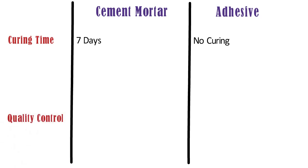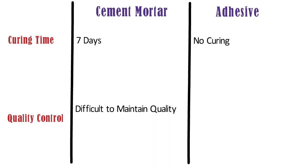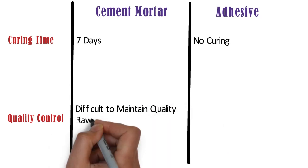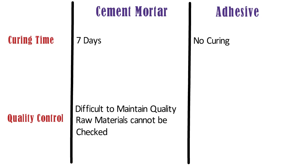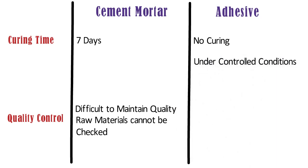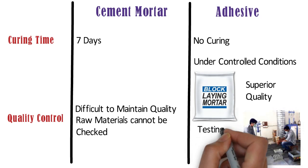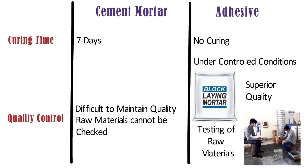Quality control. Cement mortar is prepared on site, and sometimes it is difficult to maintain the quality of mortar as it is being prepared on site. Also, the raw materials cannot be checked for quality at site. Whereas, adhesives are manufactured in factories under controlled conditions. The quality control measures can be effectively observed and the ultimate product is of superior quality. The manufacturers test the raw materials before using them in the manufacturing of the adhesives.